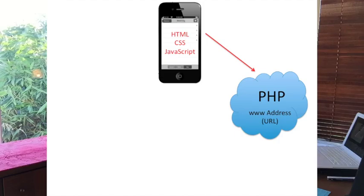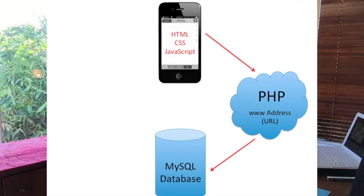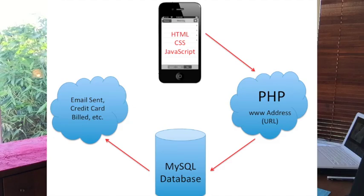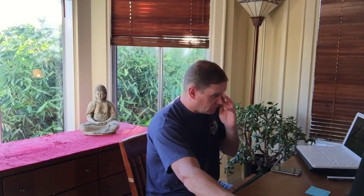Our JavaScript will call out to a PHP file. Think of PHP as a processor — it's a programming language, but all it does is process things: log somebody in, get data from the database, and display it back to the user. We'll call it a web service. The phone calls the web service, the web service calls the SQL database to insert or update a user, and then the PHP can bill a credit card, send an email, and ultimately send a response back to the phone, giving the user a different experience.